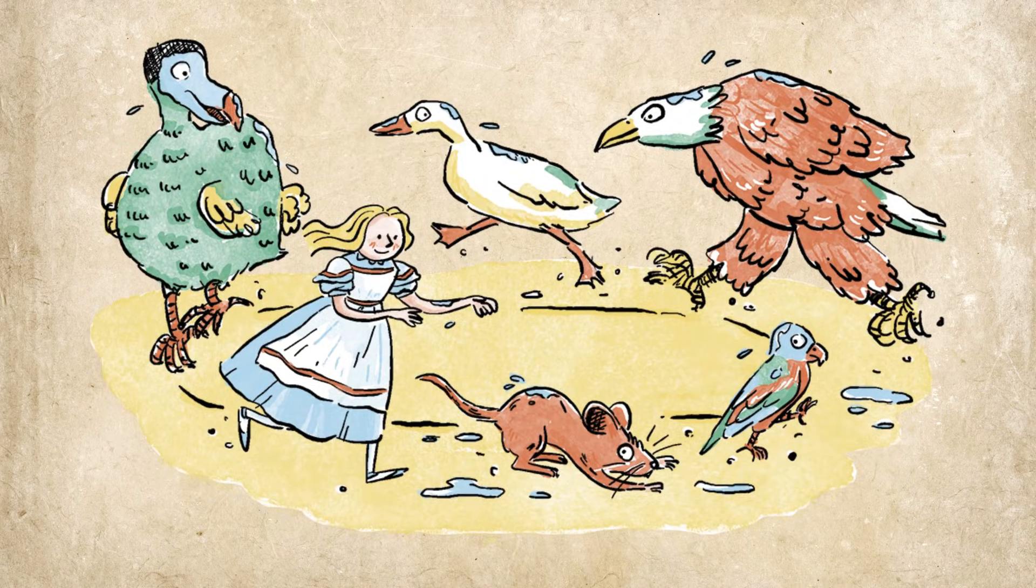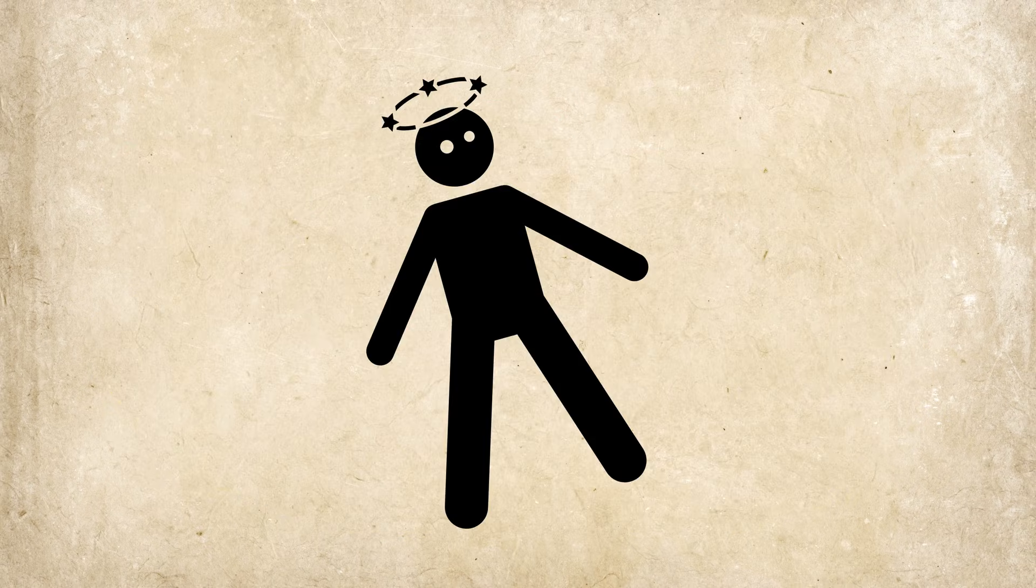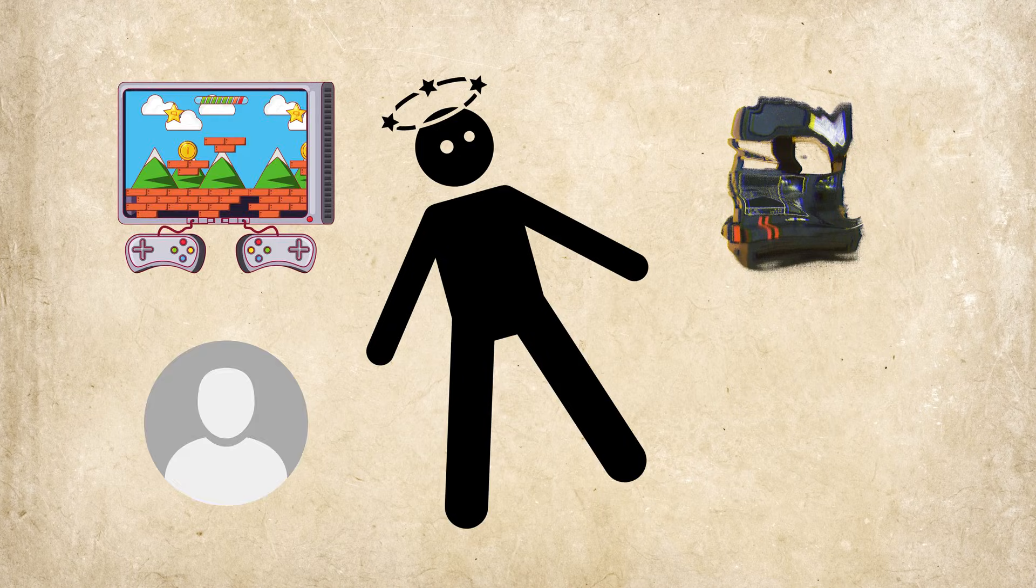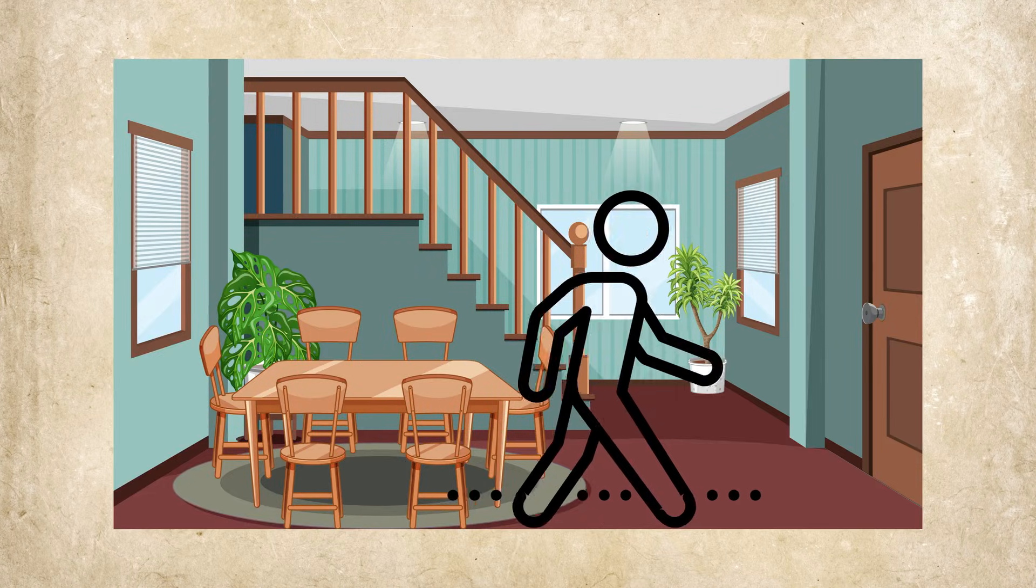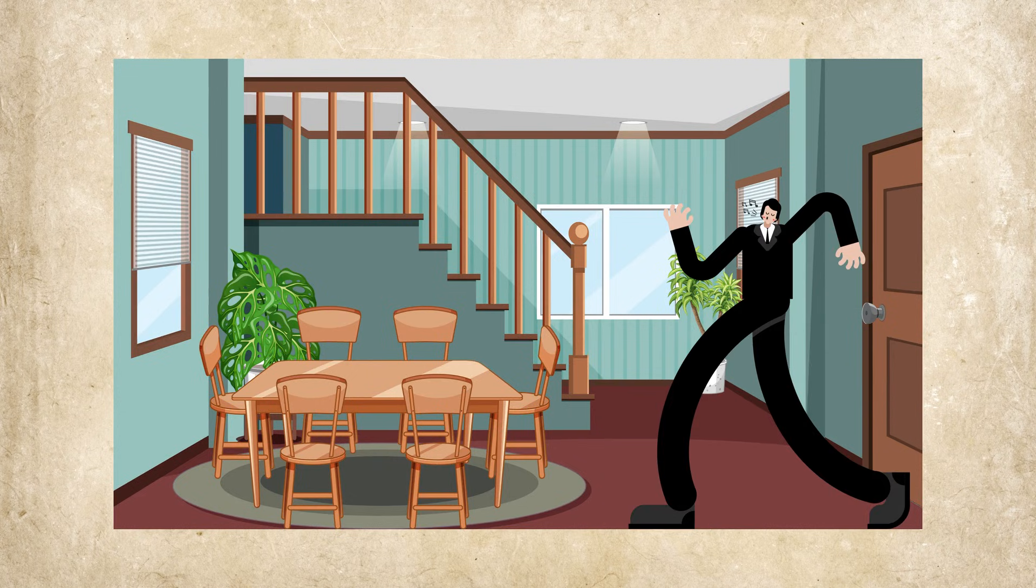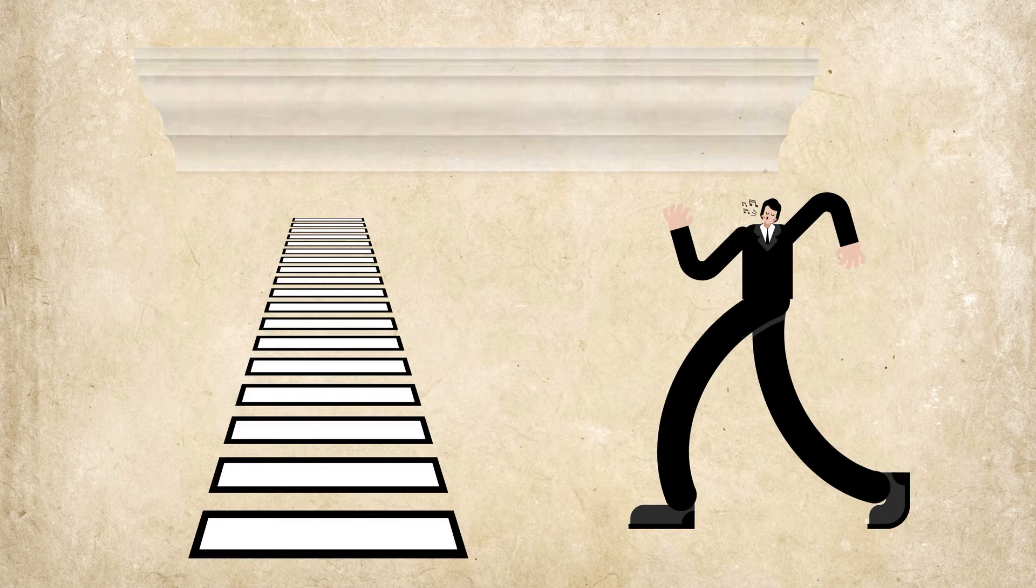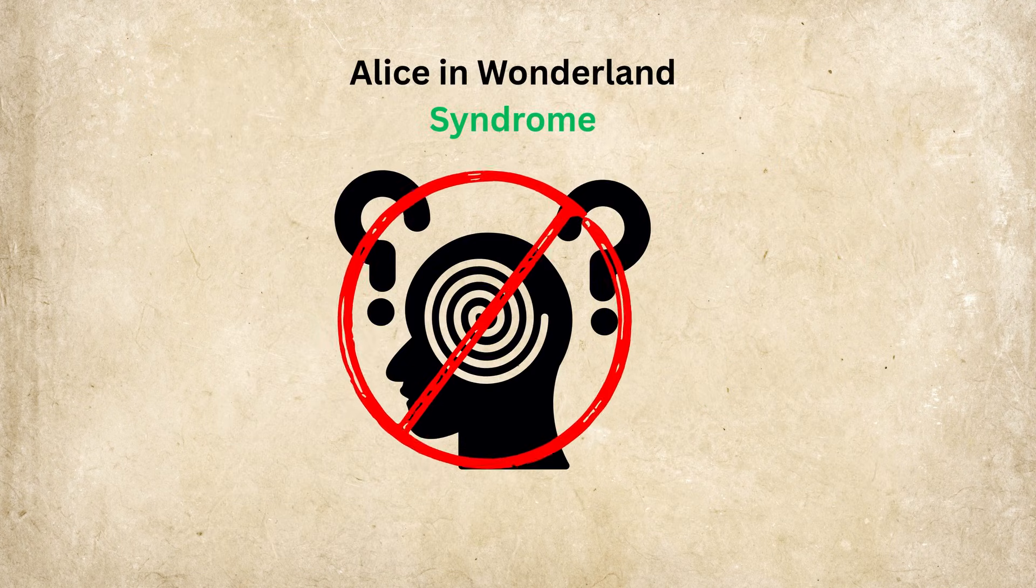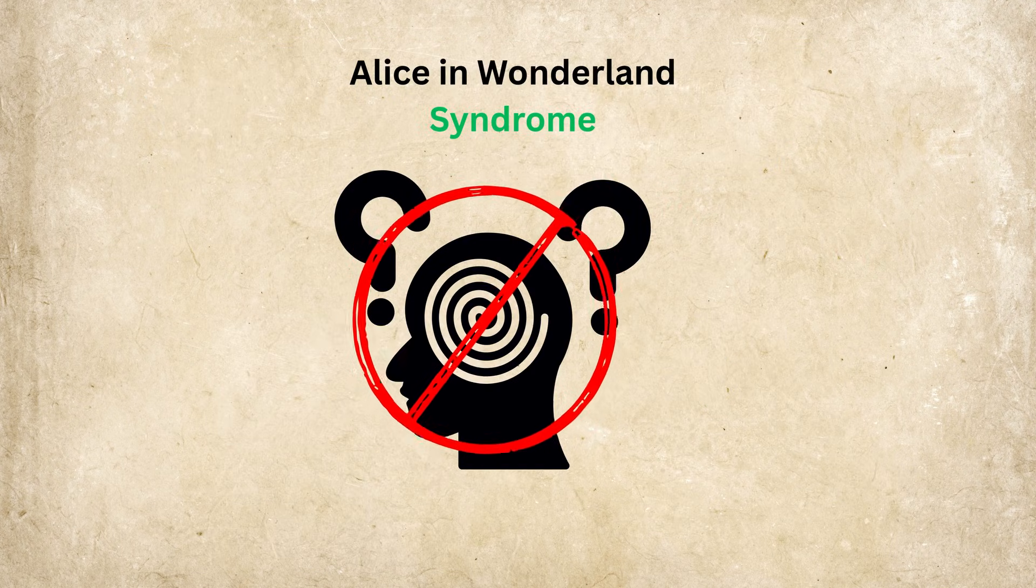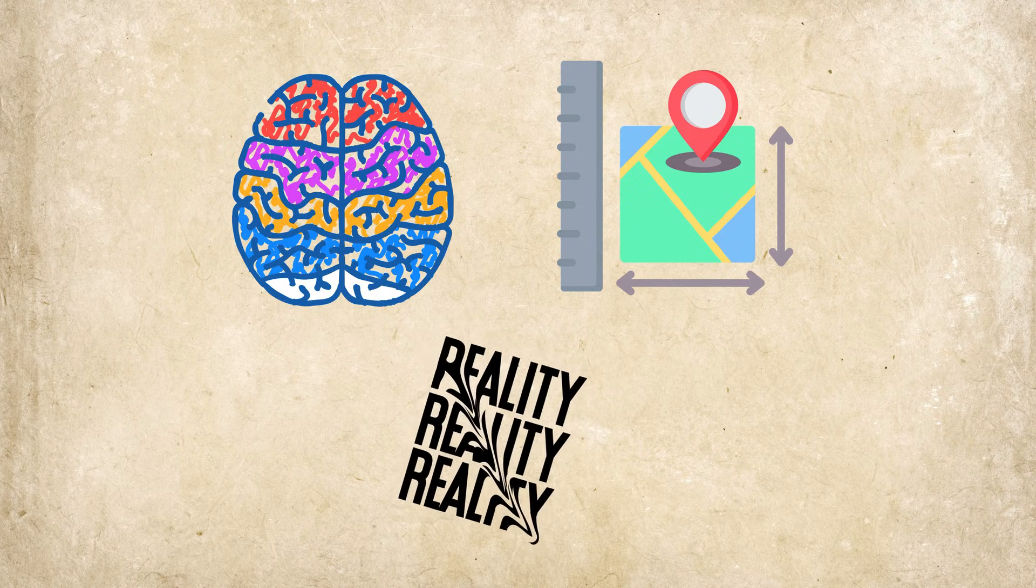Alice in Wonderland Syndrome. What if your own body felt like a warped video game avatar? Imagine walking through your apartment, but suddenly your legs stretch to six feet, ceilings soar out of sight, and the hallway seems endless. This isn't a hallucination. It's Alice in Wonderland Syndrome, when your brain's spatial map distorts reality.